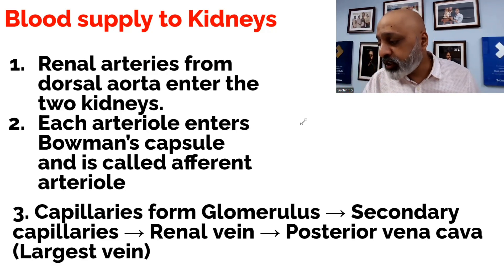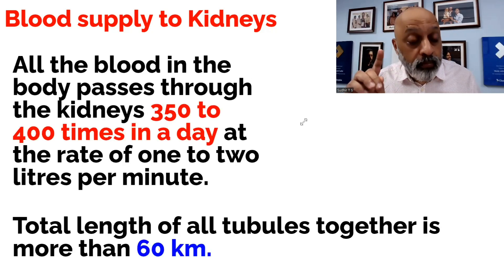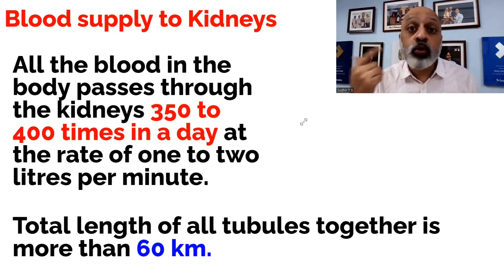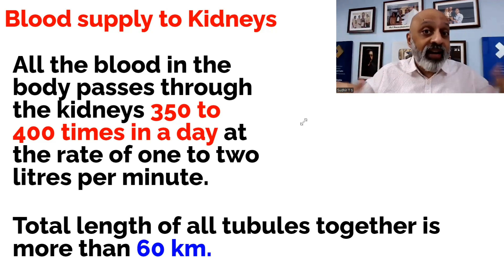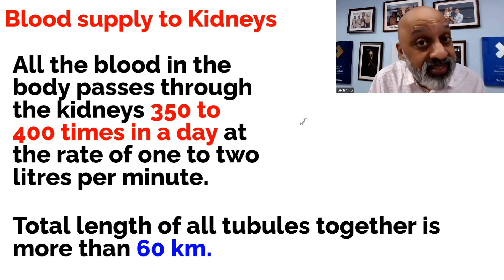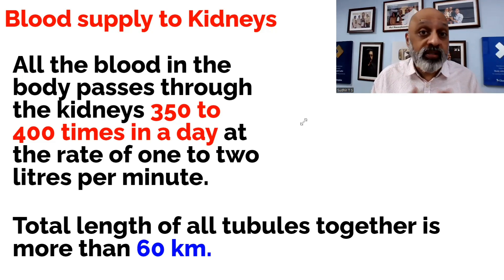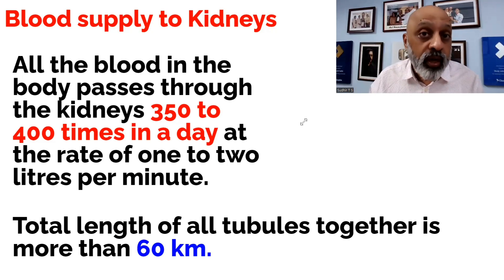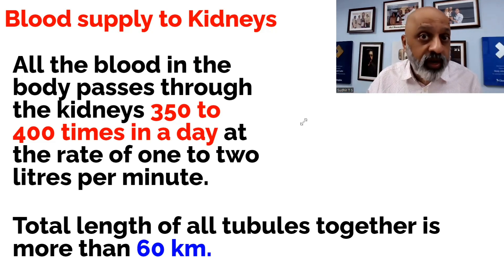Some fascinating stats: all the blood in the body passes through the kidneys 350 to 400 times in a single day, at the rate of 1 to 2 liters per minute — showing what a great machine the human body actually is. The total length of all the kidney tubules put together is more than 60 kilometers. In the next video, we will look at the functions of the kidney and the formation of urine. Thank you very much for watching.